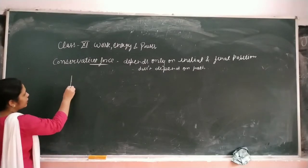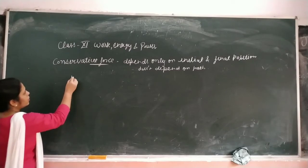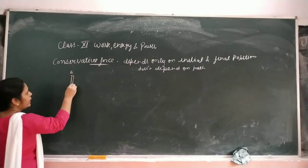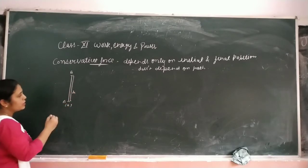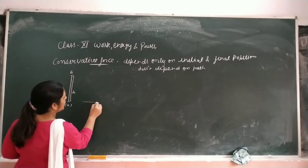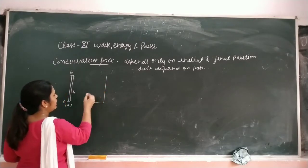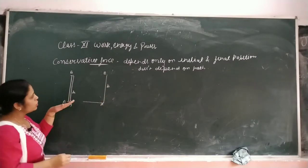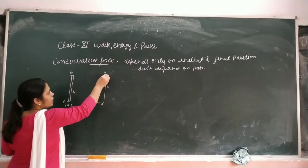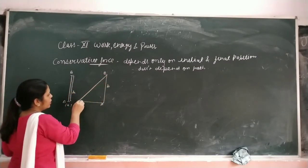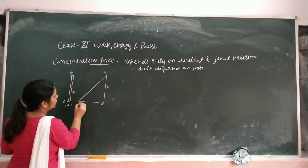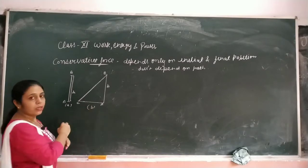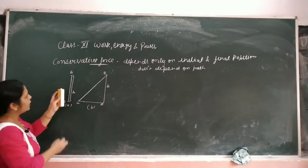First path consider kiya - a person or object is moving from A to B. Height kya hai? H hai. Second, we consider an object going on an inclined plane, height same in all cases A to B is H. That point is C. So this is your figure - B hai.